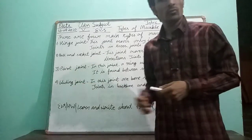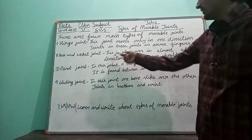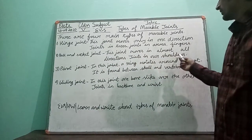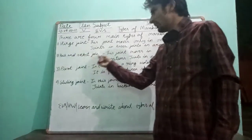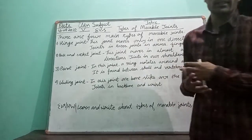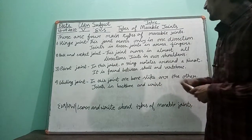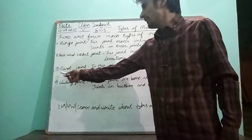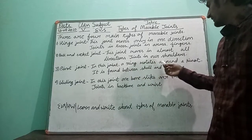Second is the ball and socket joint. This joint moves in almost all directions. Where ball and socket joints are present, that body part can move in nearly all directions. Example: joints in our shoulders.